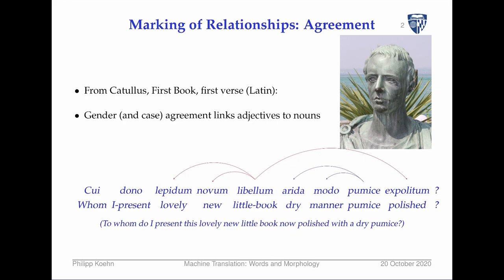Latin heavily draws on morphology instead of word order. Theoretically you can throw words into a sentence in any order, and some poets take advantage of that. Here's a sentence from a poem by Catullus: 'cui dono lepidum novum libellum arida modo pumici expolitum.' All the words ending in '-um' are related to each other — it's a lovely new little book that is also polished.